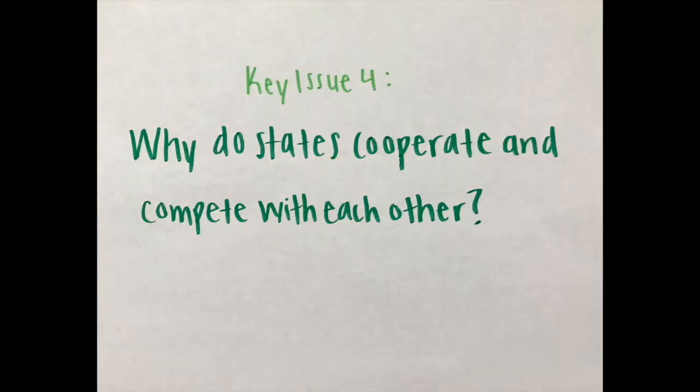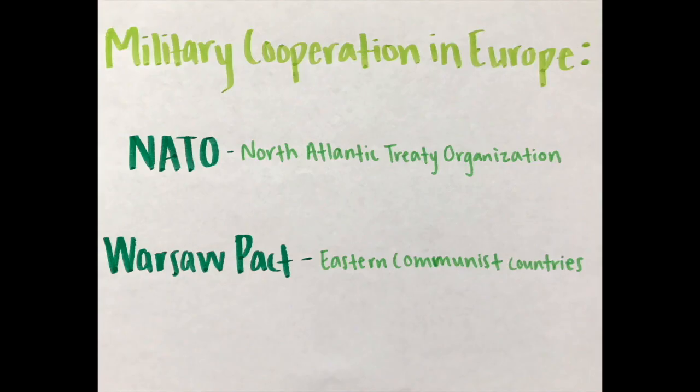Key Issue 4: Why do states cooperate and compete with each other? States compete for many reasons, including control of territory, access to trade and resources, and influence over other states. To further their competitive goals, states may form alliances. NATO, the North Atlantic Treaty Organization, and the Warsaw Pact were designed to maintain a bipolar balance of power in Europe. For NATO allies, the principal objective was to prevent the Soviet Union from overrunning West Germany and other smaller countries. The Warsaw Pact provided the Soviet Union with a buffer of allied states between it and Germany to discourage a third German invasion of the Soviet Union in the 20th century.